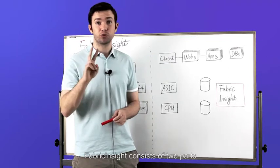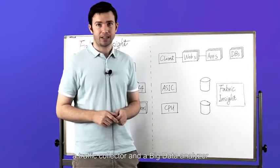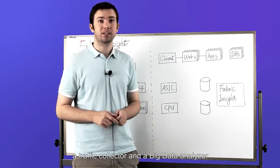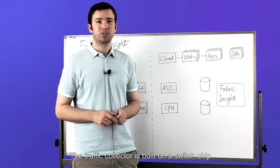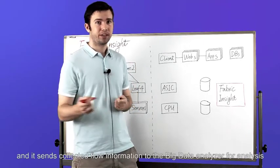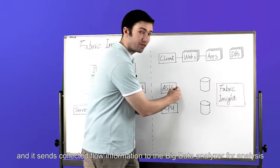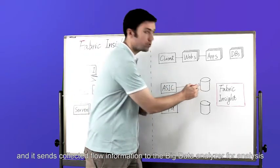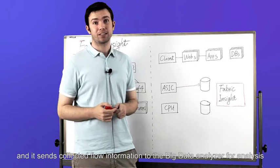Fabric Insight consists of two parts, a traffic collector and a big data analyzer. The traffic collector is built on a switch chip and it sends collected flow information to the big data analyzer for analysis.